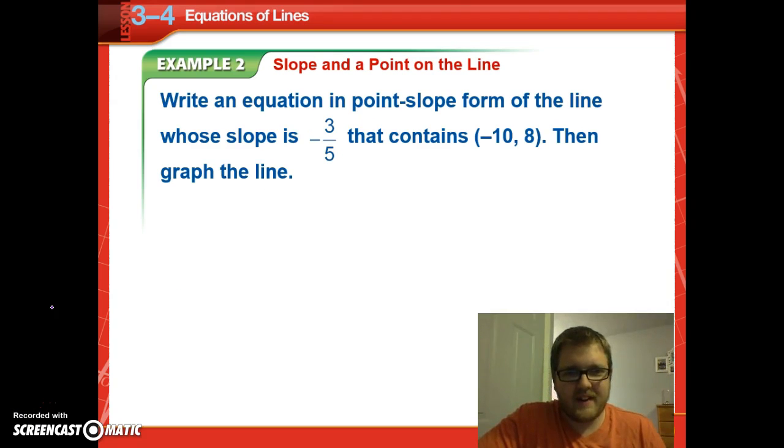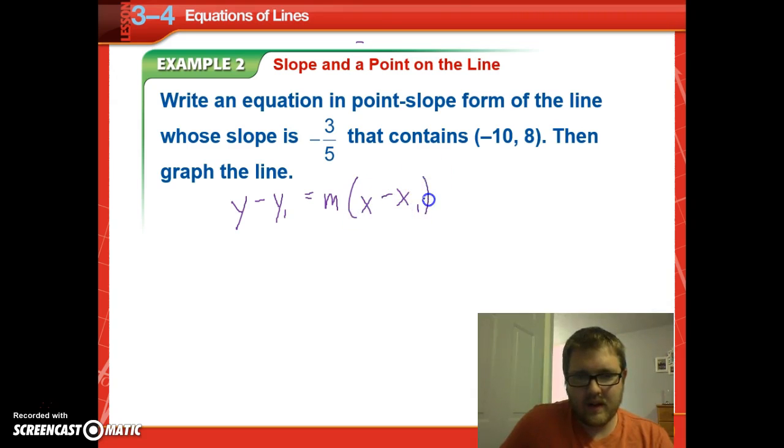All right, so let's try this example. Write an equation in point-slope form of the line whose slope is negative 3 fifths that contains the point negative 10, 8. Then graph the line. So here we want to use point-slope form, which, if you recall, is y minus y1 equals m times x minus x1. And we want to take y minus our y value, which is 8, equal to our slope value, which is negative 3 fifths, times x minus our x value, which is negative 10. Those negatives together become a plus.